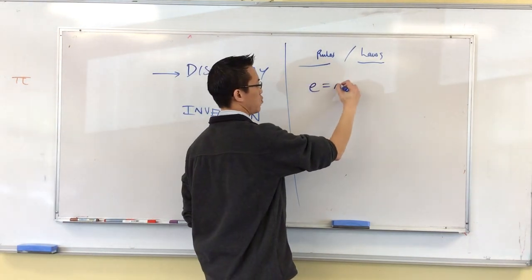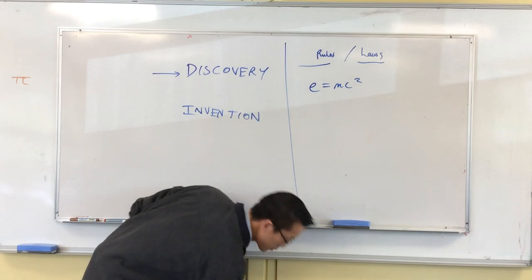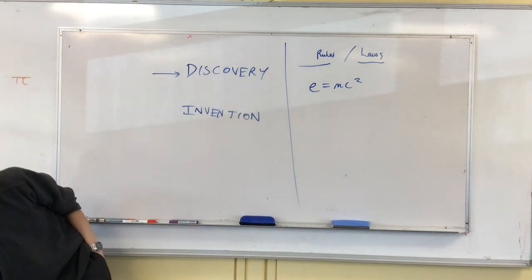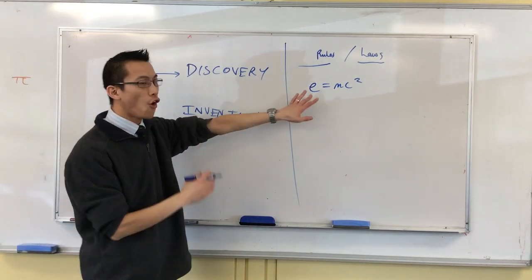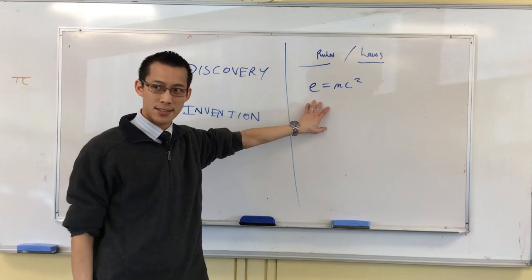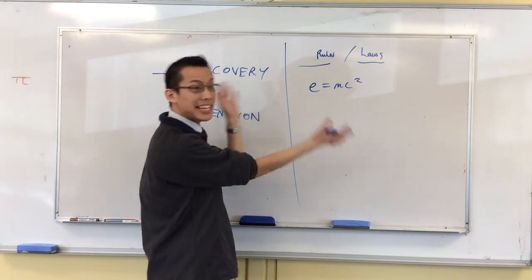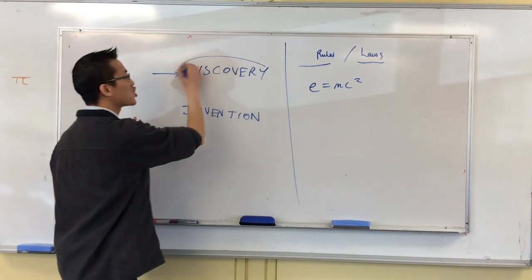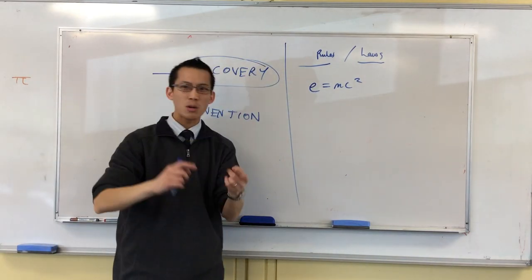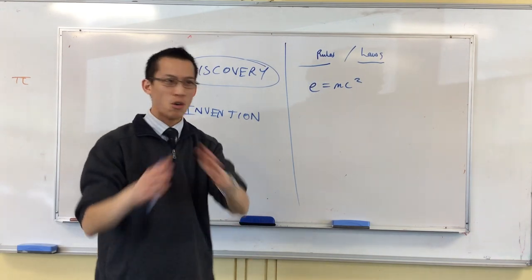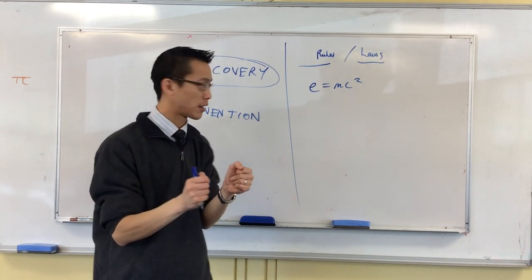You know, for instance, E equals MC squared. I know this sort of overlaps in maths, but really this is about scientific observation. Now, before Einstein came along and said this, it was already true. It didn't need a human being to come along and state it or define it. It was a discovery. Or gravity, or inertia, or on and on. In science, that's the way it works.